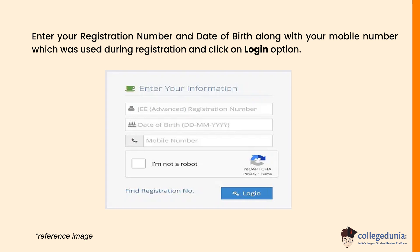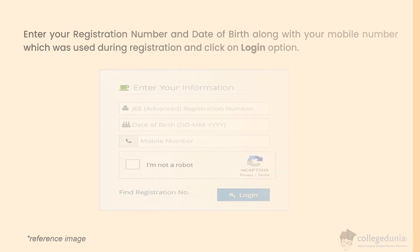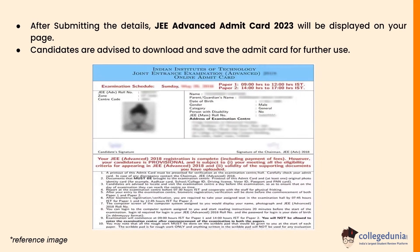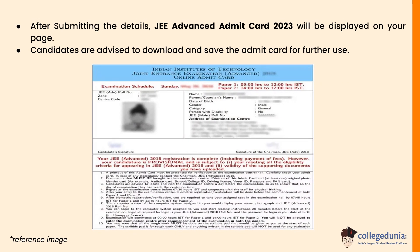Here you can enter your registration number and date of birth along with your mobile number, which was used during registration, and then click on the login option. After submitting the details, the JEE Advanced admit card 2023 will be displayed on your page.